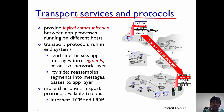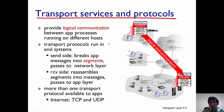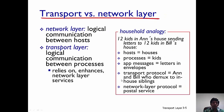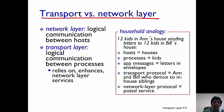The goal of the transport layer is to provide a logical connection — not a physical connection — between two application processes running between hosts. A single host can run multiple application processes, and the goal is to provide a logical connection between those application processes. One of the major differences between the transport and the network layer is that the transport layer provides a logical connection between processes, while the network layer provides a logical connection between end hosts.